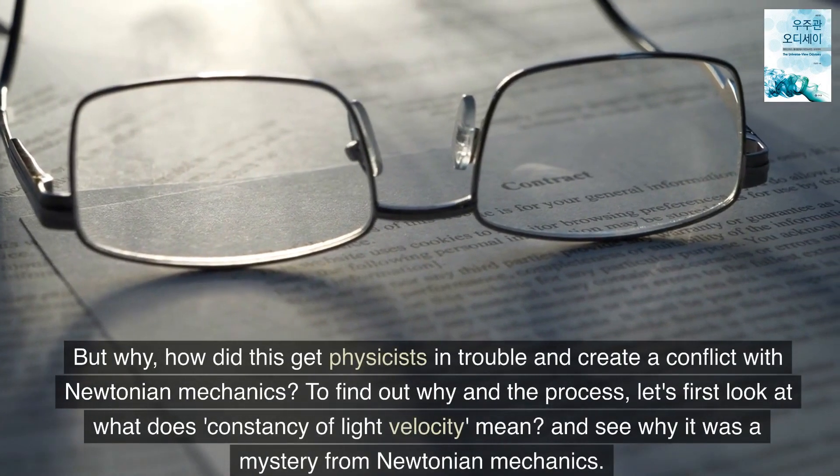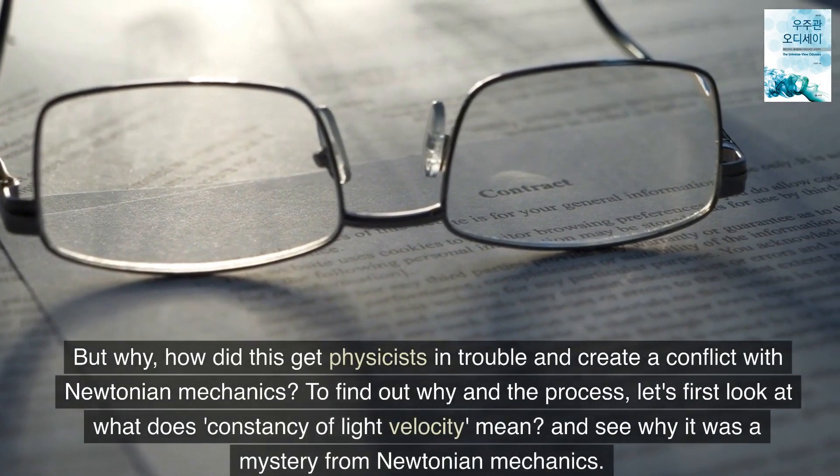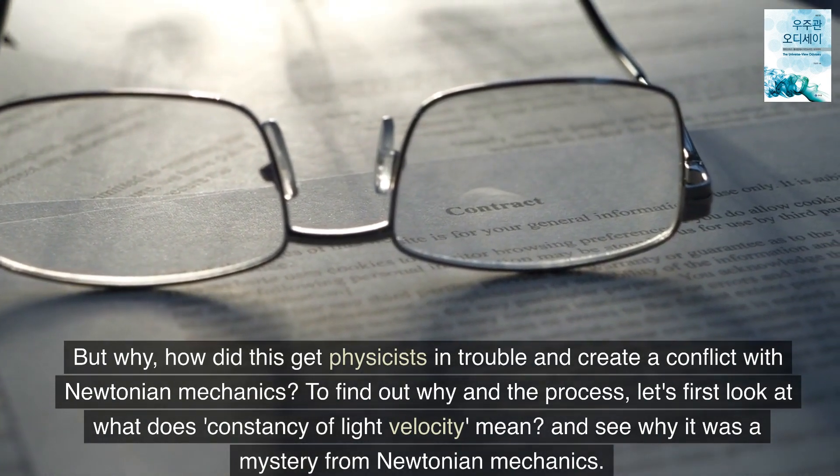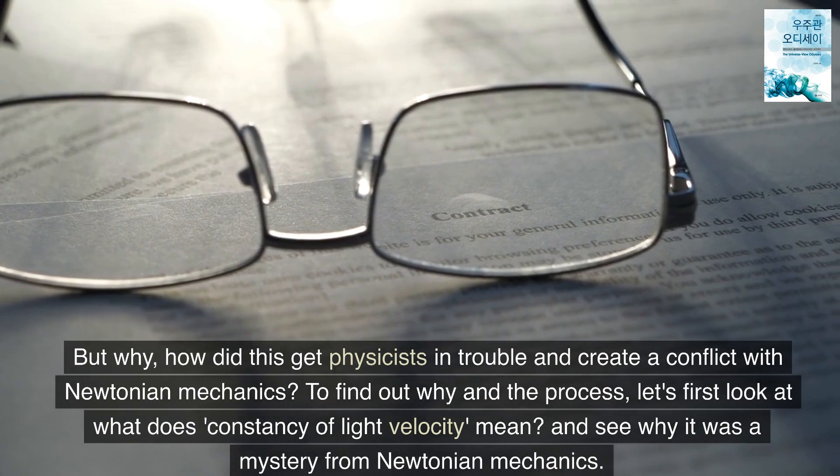But why, how did this get physicists in trouble and create a conflict with Newtonian mechanics? To find out why and the process, let's first look at what does constancy of light velocity mean and see why it was a mystery from Newtonian mechanics.